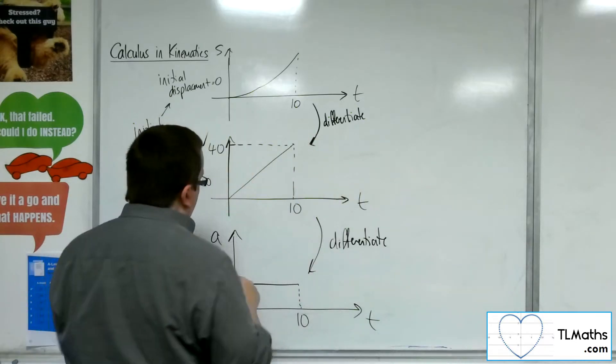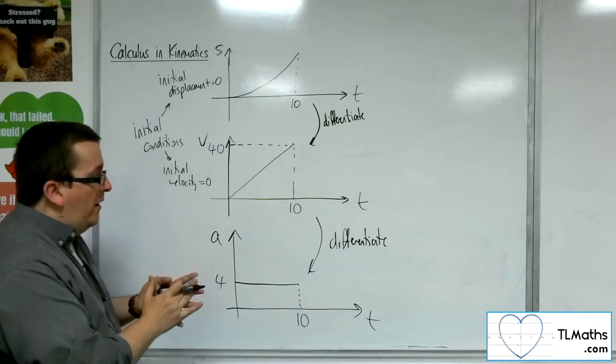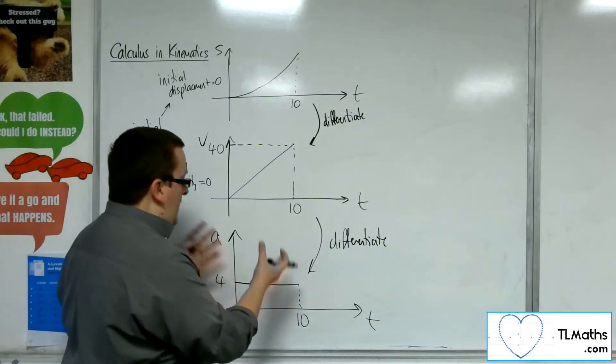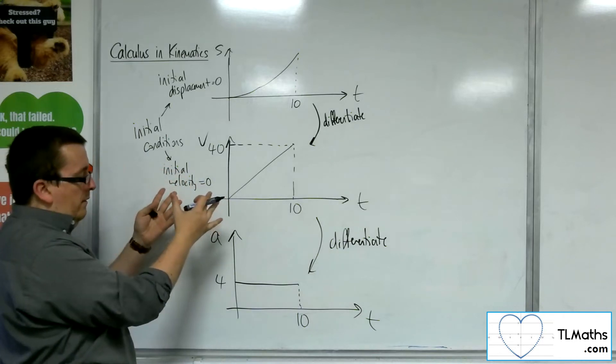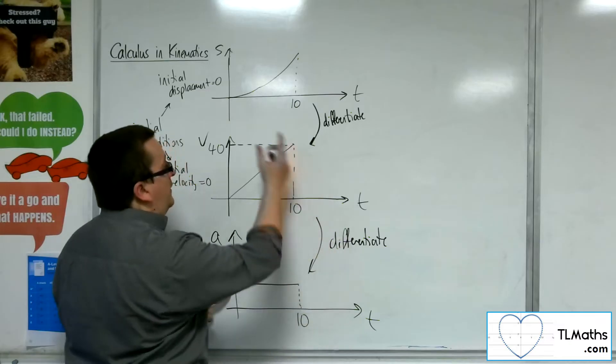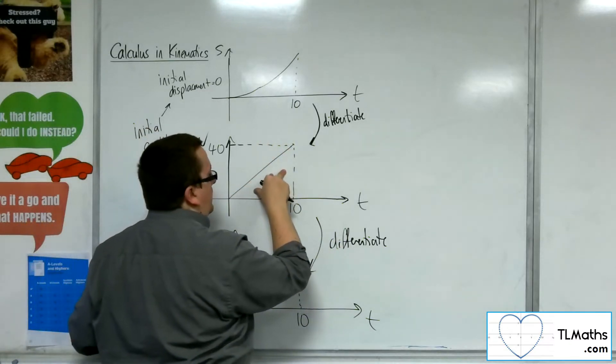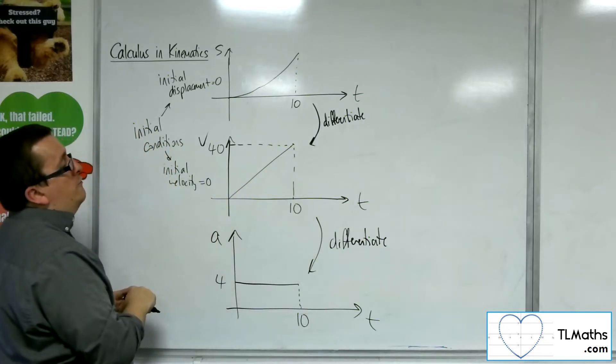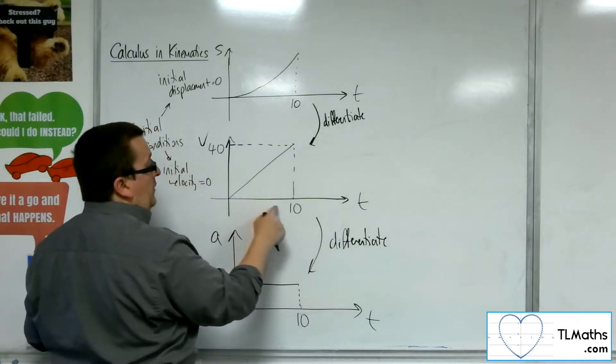I've also seen that the area between the line and the x-axis or the time axis of the acceleration represents the velocity. So the fact that it's 4 times 10 is getting me that final velocity.